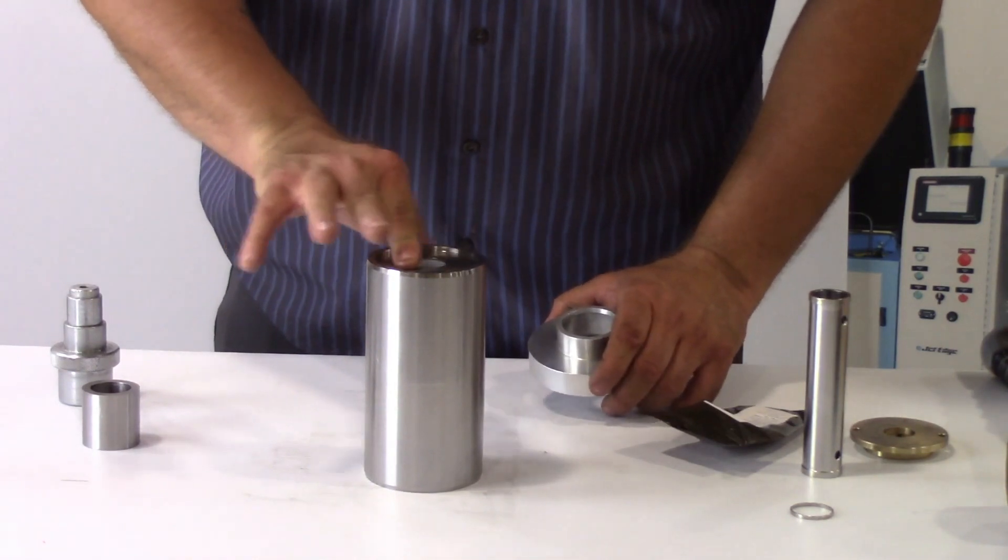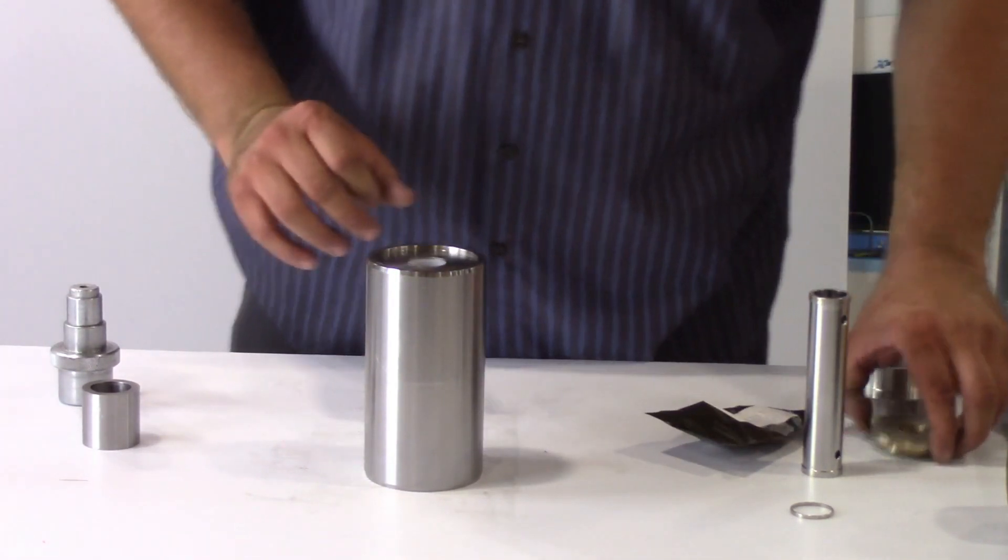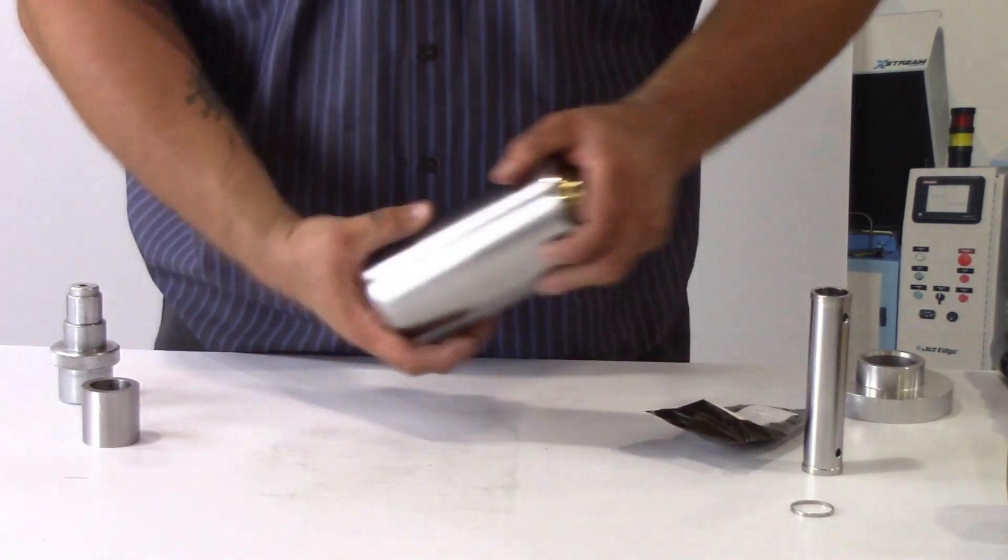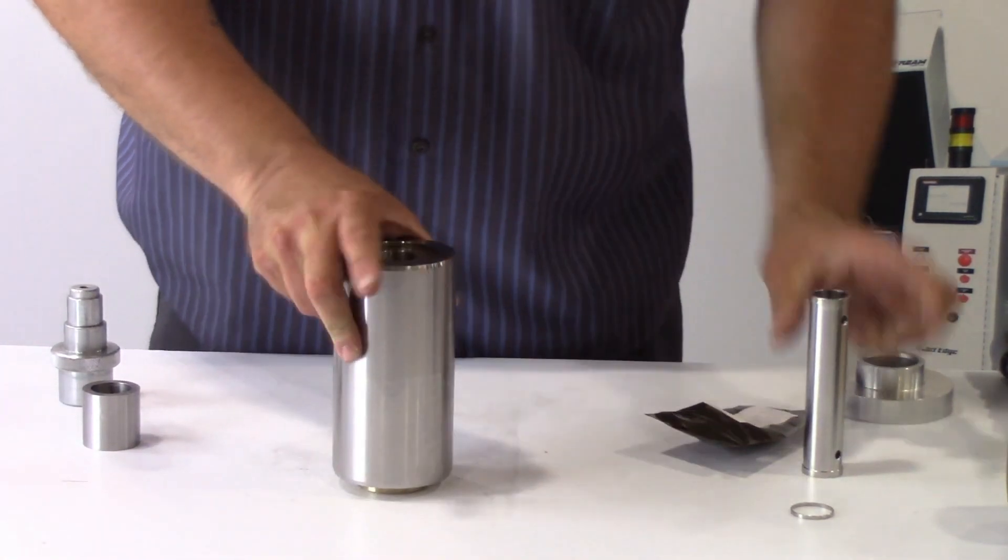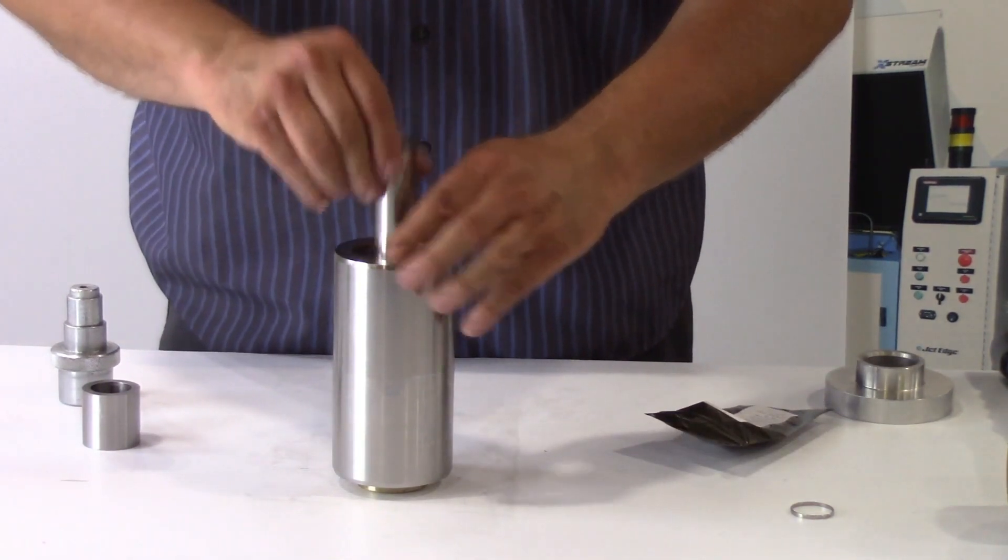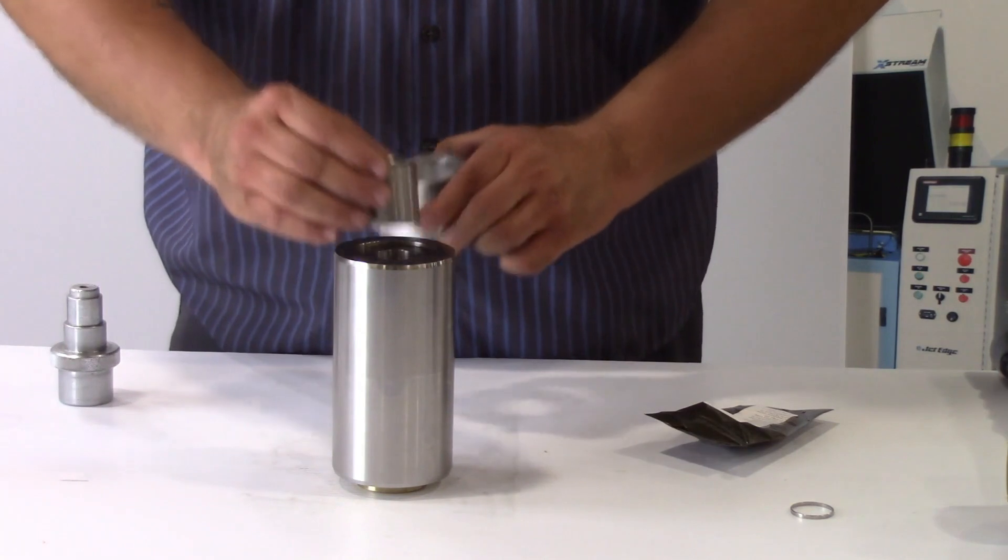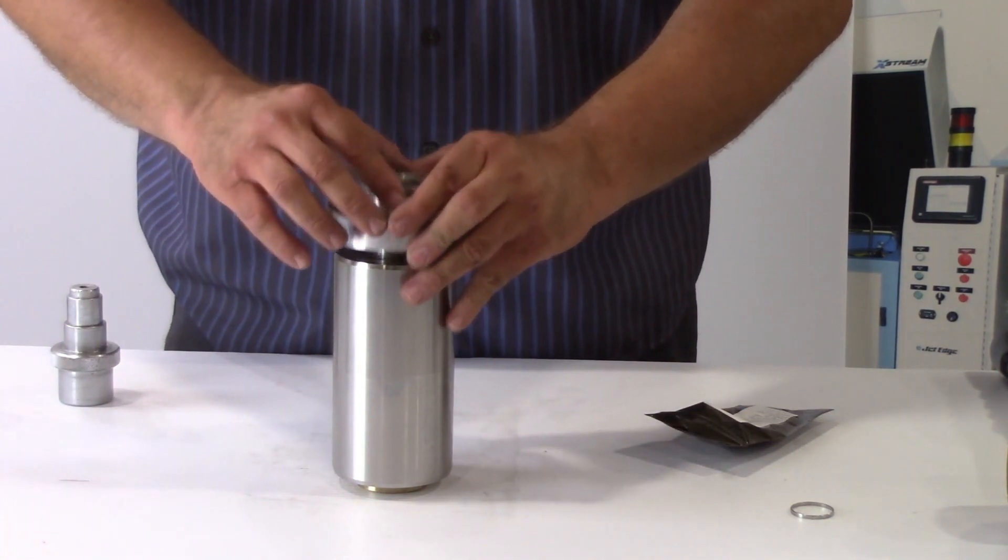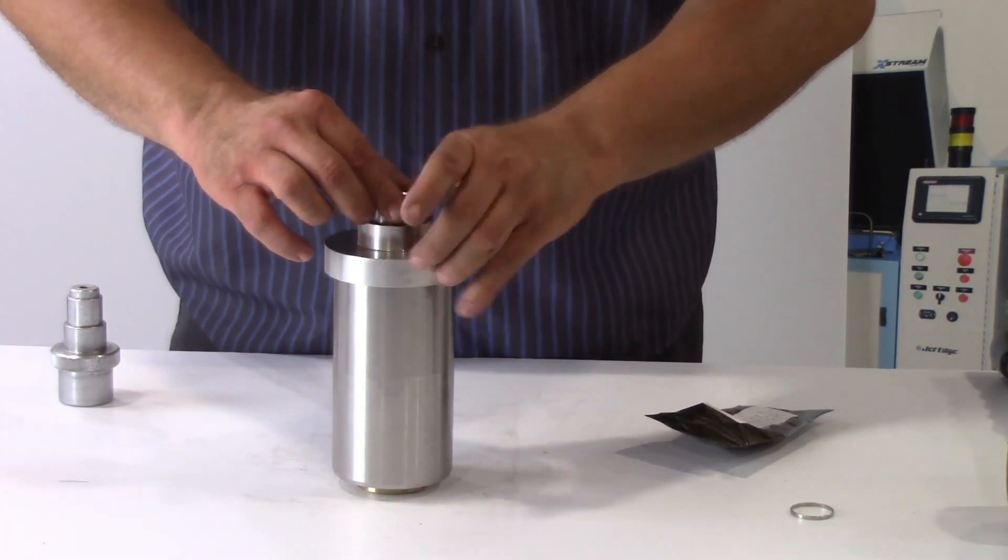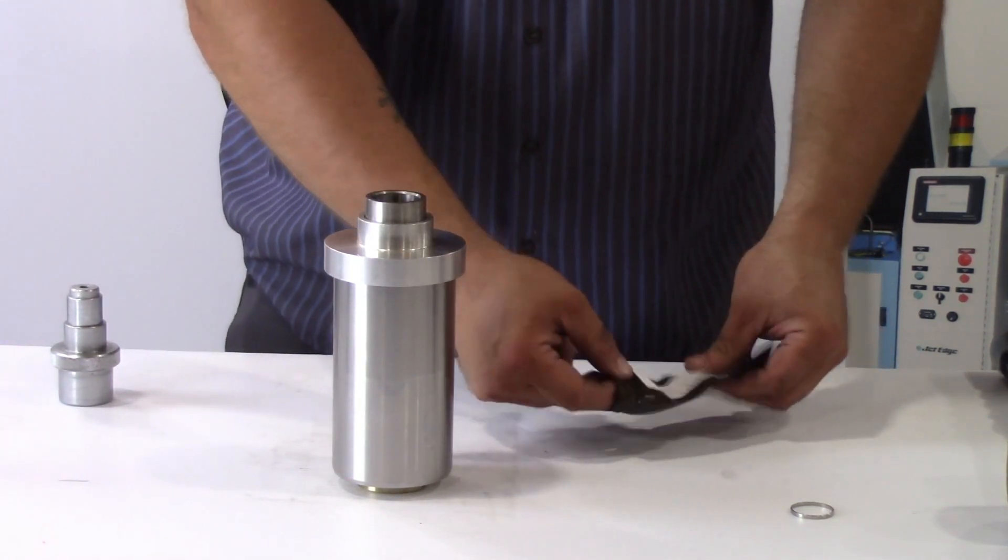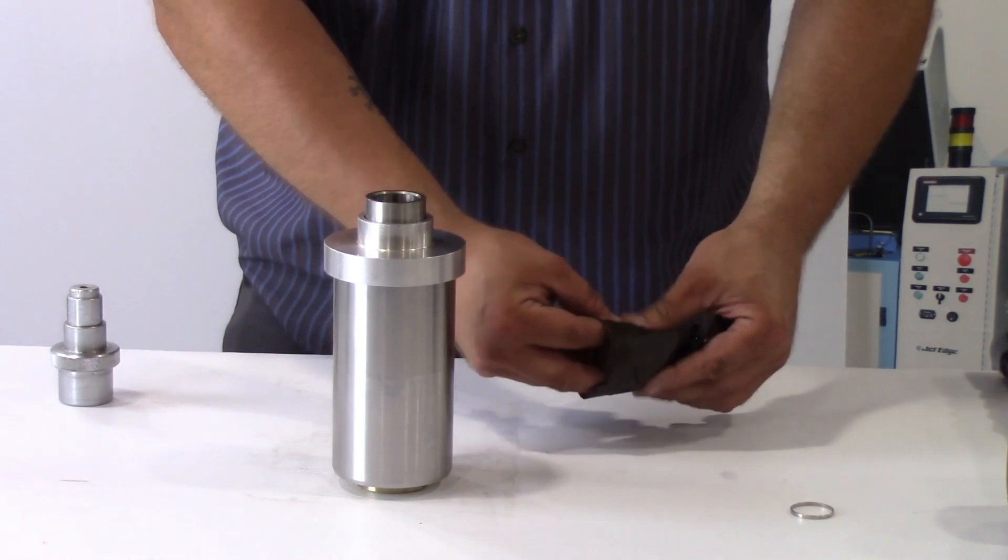Seat the consumable backup disk into the bore to support the installed seal. Turn the cylinder over and install the spacer tube. Repeat these steps for the second high-pressure seal and backup ring. During this process, make sure you are working on a clean work area and hands are free of debris.